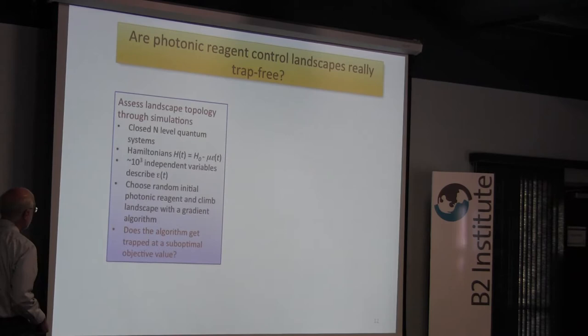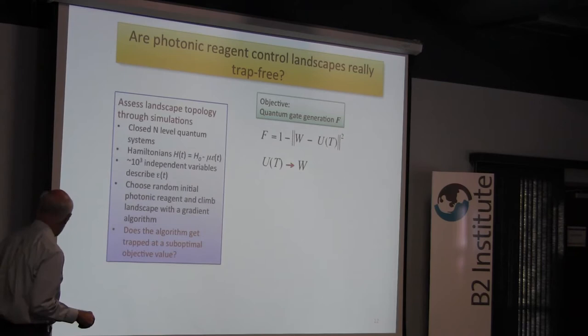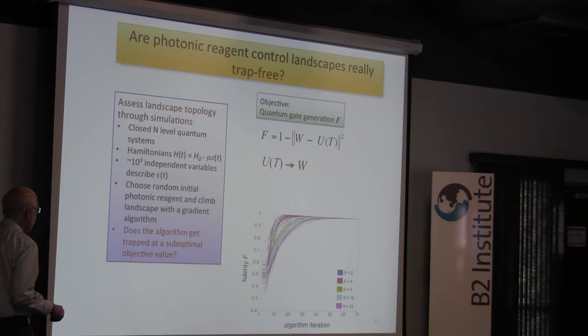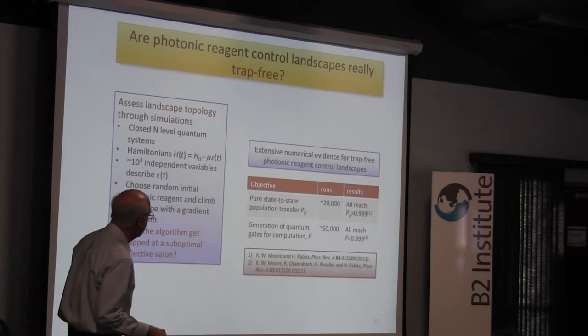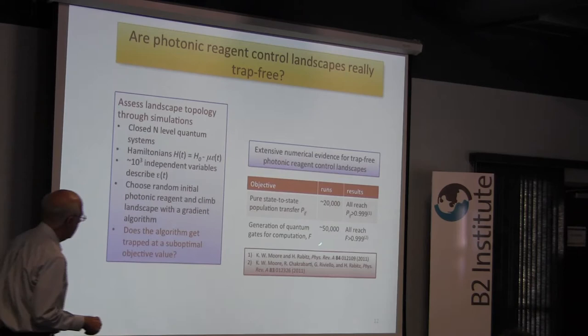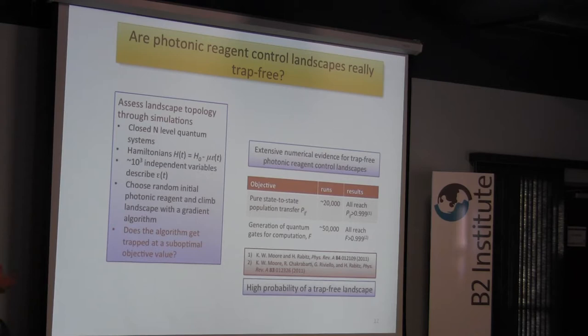We then move to the target of making a unitary transformation — trying to minimize the norm between the generating unitary transformation of the dynamics and the target transformation. Once again, everything made it. The statistics: about 20,000 runs of pure-state-to-pure-state transitions and 50,000 runs for the unitary transformation quantum gates. This has also been done — not yet published — for trace observable problems, about another 40,000 runs. Every single one was careful — not a single trap. Statistically, the evidence is overwhelming.